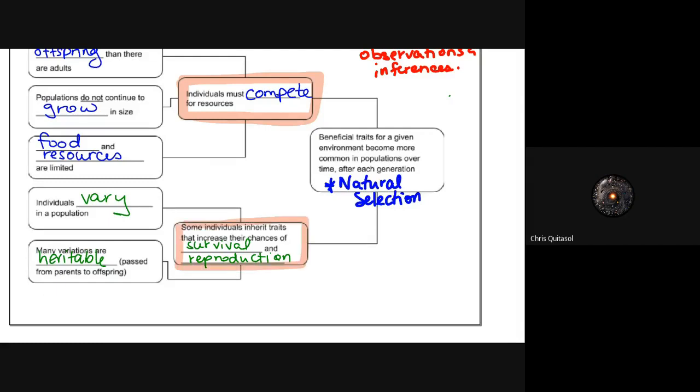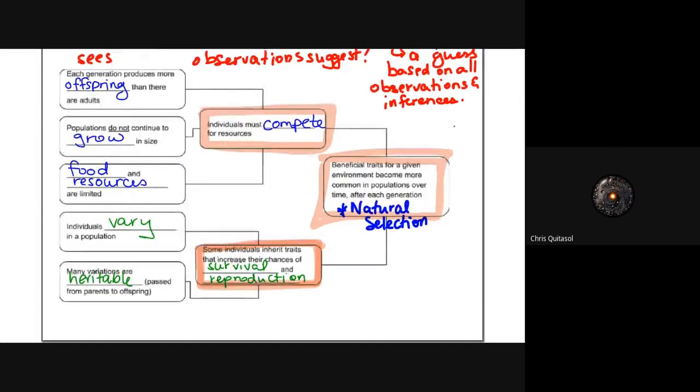Those two main observations allowed him to make the inference that some individuals are going to inherit traits that increase their chances of survival and reproduction. That increased chance of survival and reproduction makes them more fit for survival and reproduction. Combined with the idea that individuals need to compete for resources, this led to the theory or the idea behind natural selection: beneficial traits for a given environment become more common in populations over time and after each generation.